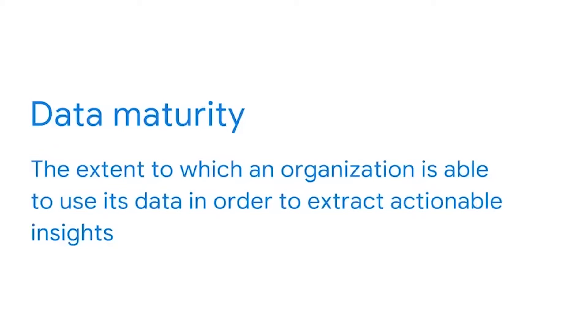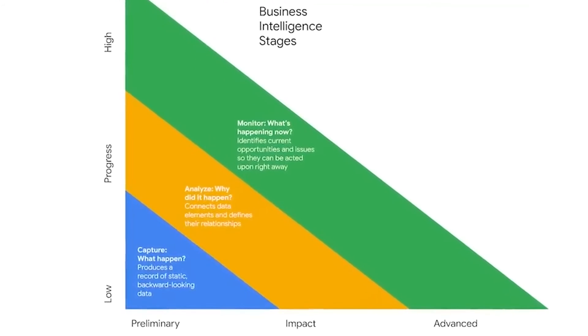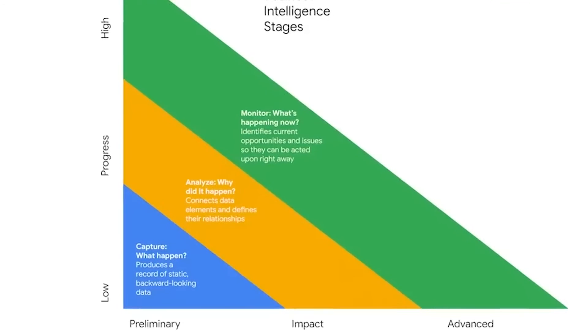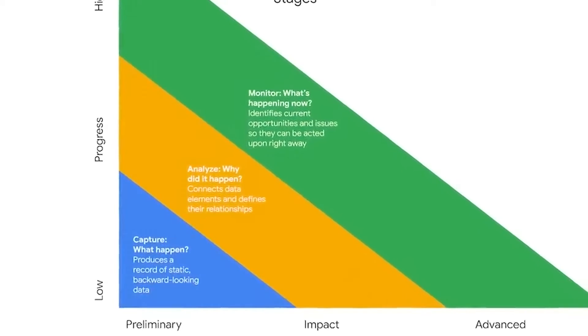Business intelligence also has phases — a sequence of three stages that determines the value of BI, as well as organizational data maturity. As you've learned, data maturity is a meaningful goal for any BI team because high maturity means their organization is effectively using its data in order to extract actionable insights. In BI, the three stages are capture, analyze, and monitor. As you advance through each one, the process requires a deeper level of exploration and investigation, so each becomes more complex. These phases might be automated or done manually, but each one adds significant business impact. It's important to understand these stages and how they can benefit you as a BI professional.